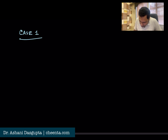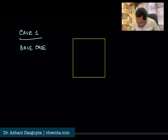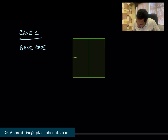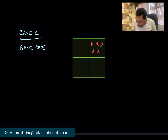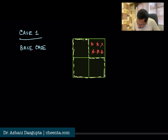We will first do Case 1 — later we will call it the base case. We draw a 2×2 grid. It's very simple to understand that if you throw away any one box, the remaining 3 boxes can be covered by a corner or an L-Tromino. You just need to turn the L-Tromino in the right way, place it over the grid, and the remaining part will be covered.